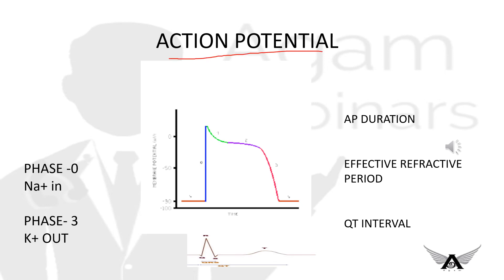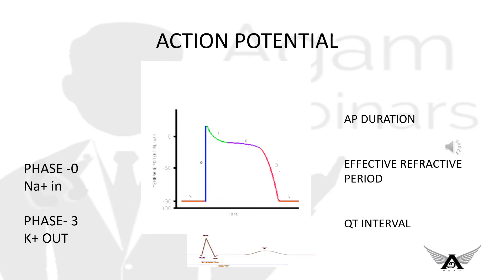Phase 0 deals with sodium influx and phase 3 deals with potassium outflux. Phase 0 is the depolarization state and phase 3 is the repolarization state. AP duration means the duration from the beginning of depolarization till the end of repolarization. ERP includes phase 0, 1, 2, and some part of phase 3 — here the sodium channels are inactive. QT interval is the same as AP duration.